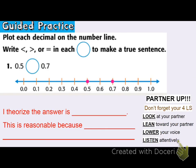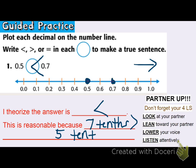Moving into guided practice. Plot each decimal on a number line and write less than, greater than, or equal in each circle to make a true sentence. Well, 5 tenths has a dot here on the number line, and 7 tenths is here. Anything on the right is going to be a larger value. So 7 tenths is greater than 5 tenths, or you can think of it as 5 tenths is less than 7 tenths. That's reasonable because 7 tenths is bigger than 5 tenths — it's actually 2 tenths bigger.